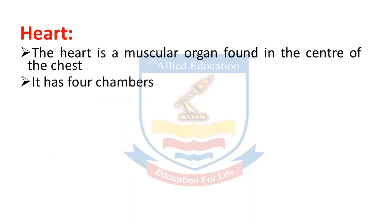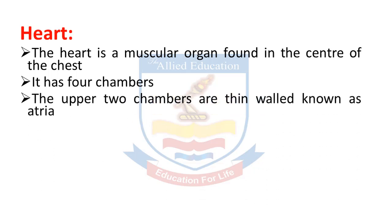It has four chambers — iske chaar khaane hain. The upper two chambers are thin-walled, known as atria — upar waale jo do khaane hain, wo patli deewaroon waale hain, aur unhe hum kehte hain atria.